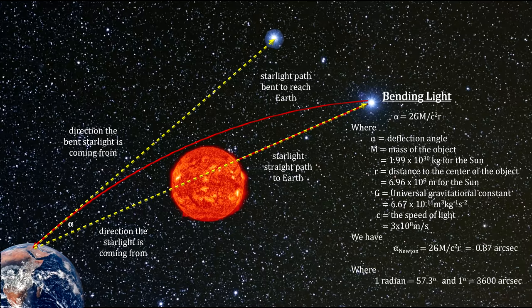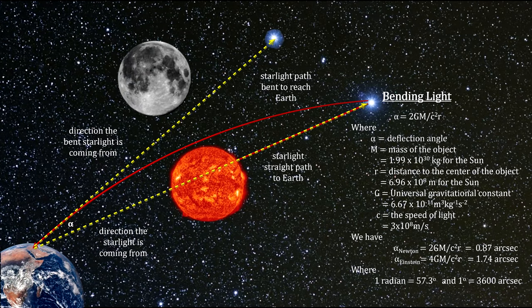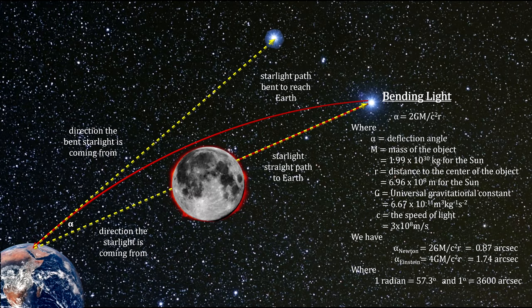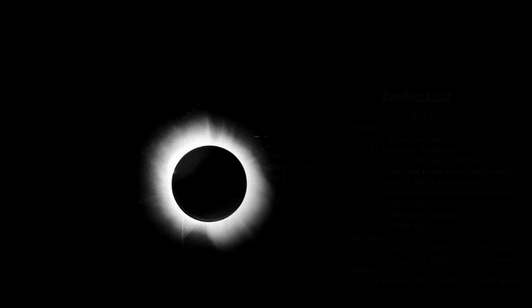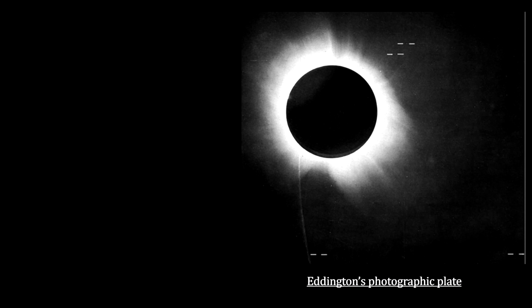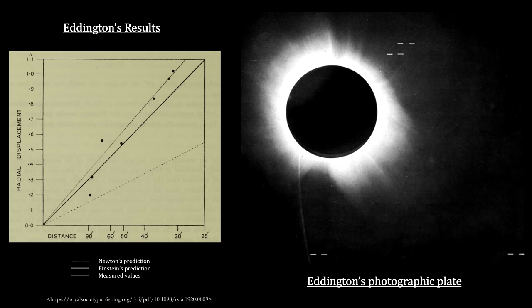But the two theories predict different amounts of bending for the same mass and distance measurements. For light passing near the surface of the Sun, Newton's theory predicts a deflection angle of 0.87 arc seconds. Einstein's theory predicts a deflection angle of 1.74 arc seconds — twice Newton's prediction. Einstein pointed out that the best way to test his theory was to study apparent star locations during a total eclipse of the Sun. In 1919, a solar eclipse was slated to occur with the Sun silhouetted against the Hyades star cluster, the nearest open cluster to our solar system.